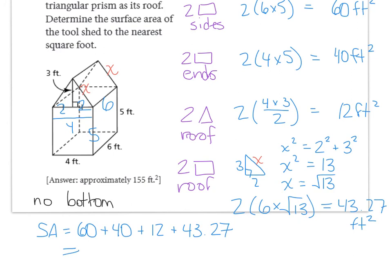When we take a look at all these pieces together, we can find the total surface area. And, remembering that the question asks us to round to the nearest square foot, we find this final answer that the surface area is approximately 155 feet squared.